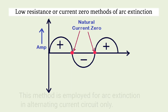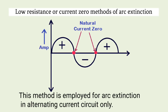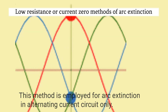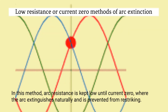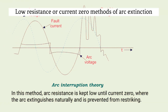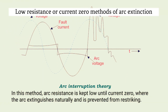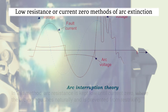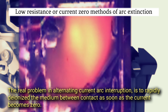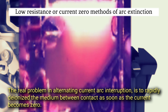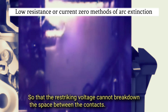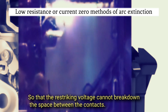Low resistance or current zero method. This method is employed for arc extinction in alternating current circuits only. In this method, arc resistance is kept low until current zero, where the arc extinguishes naturally and is prevented from restriking. The real problem in alternating current arc interruption is to rapidly de-ionize the medium between contacts as soon as the current becomes zero, so that the restriking voltage cannot break down the space between the contacts.